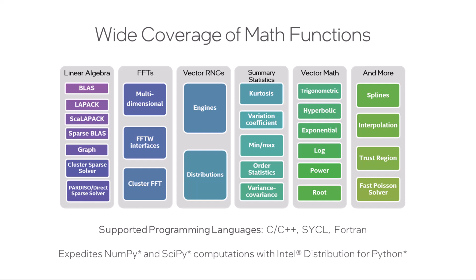The math functions are provided in C, C++, and Fortran interfaces across heterogeneous architectures, including CPUs, GPUs, and other accelerators. OneMKL also accelerates Python computations when libraries like NumPy and SciPy are used in conjunction with the Intel Distribution for Python.